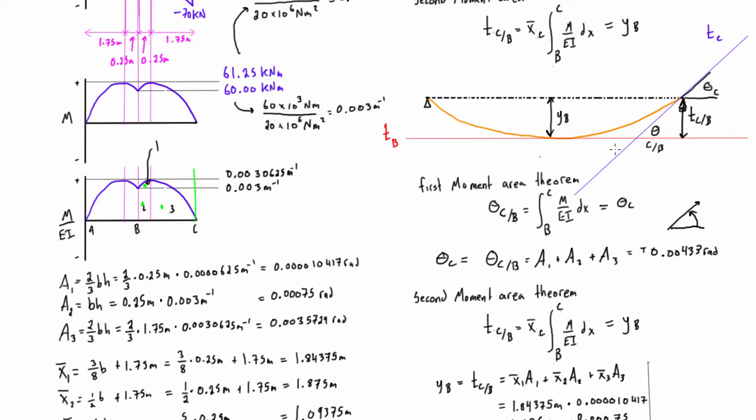Because when we find the tangents at those, the tangent at B we know is going to be horizontal because of the symmetry of the problem. And then when we find the tangent, the angle of the tangent of C relative to B, that's the actual angle of theta C, which was part of the question. And then when we find the tangential deviation here, again the way that this is set up, this tangential deviation is going to equal the actual displacement of the beam at the midpoint. So the difference in height basically from this point up to here.